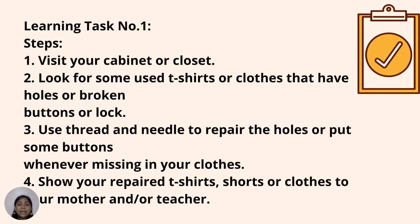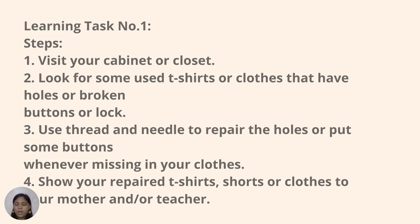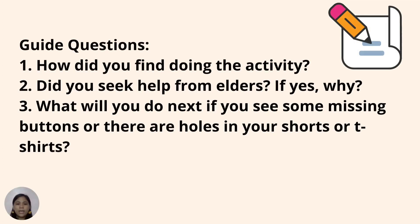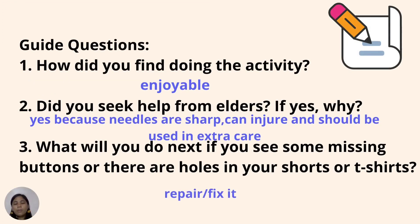For our first learning task, step 1 is to visit your cabinet or closet. Look for a used t-shirt or clothes that have holes, broken buttons, or a broken lock. Use thread and needle to repair the holes or replace any missing buttons in your clothes, then show your repaired t-shirt, shorts, or clothes to your mother or teacher. Guide questions: How did you find doing the activity? Did you seek help from elders — if yes, why? What will you do next if you see missing buttons or holes in your clothes? Possible answers: Number 1, enjoyable. Number 2, yes, because needles are sharp and can injure — they should be used with extra care. Number 3, repair or fix it.